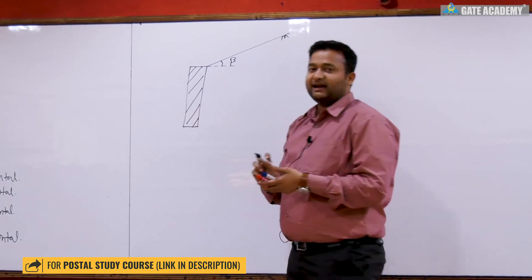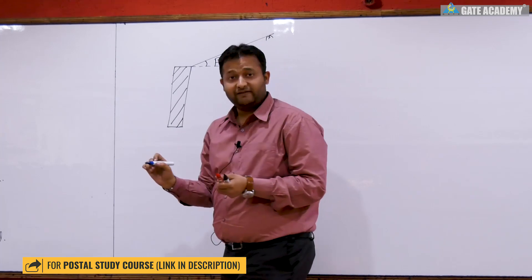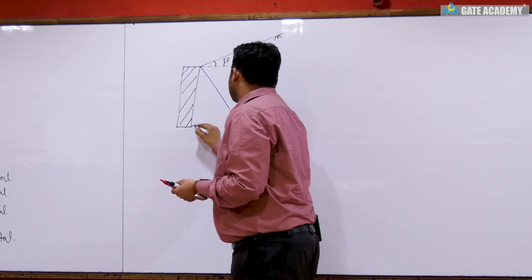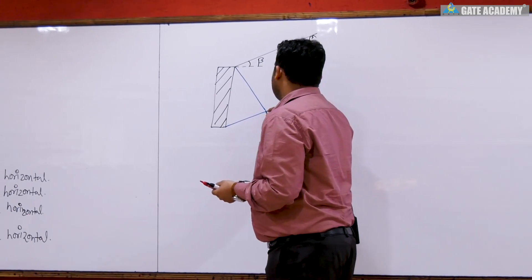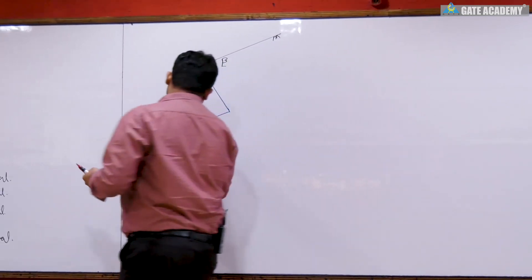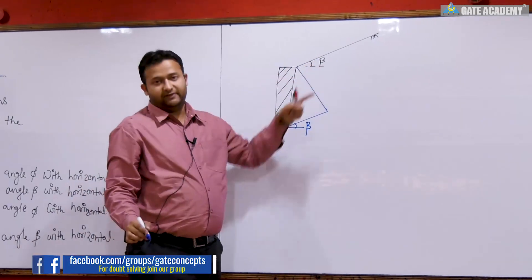Suppose it is retaining the backfill at beta angle. In this condition, what will happen is the pressure distribution. This angle will be your beta, where beta is the angle of your backfill.